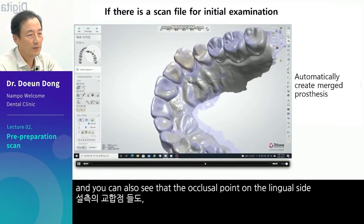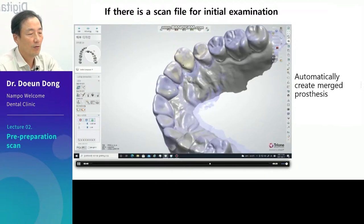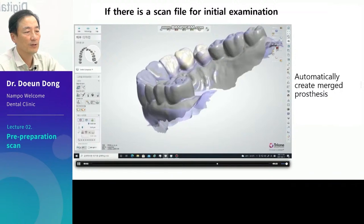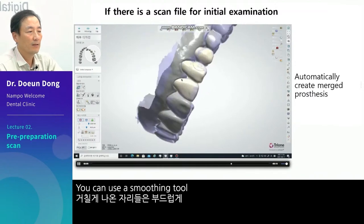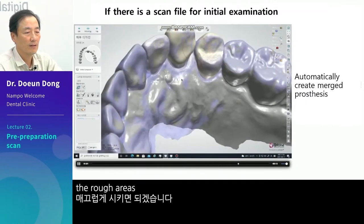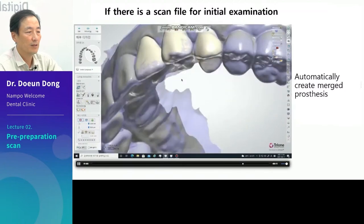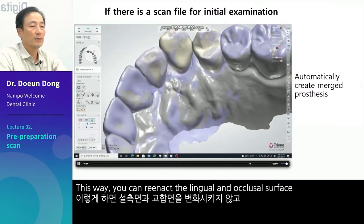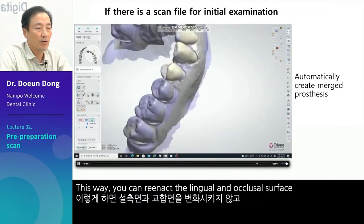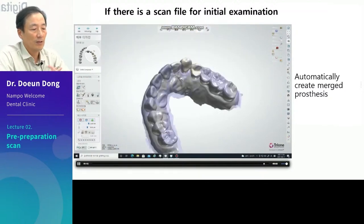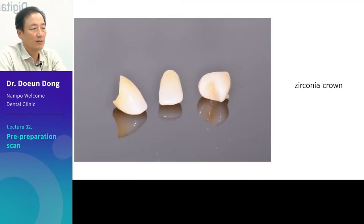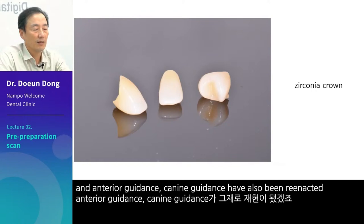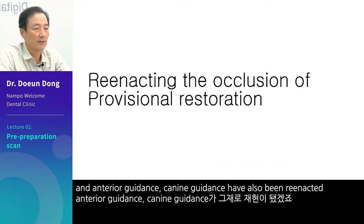And you can also see that the occlusal point on the lingual side has occluded well. You can use a smoothing tool to smooth out the rough areas. This way, you can reenact the lingual and occlusal surface without changing them. Then you can put it in the milling machine. This is how the zirconia crown is made. The lingual surface has been reenacted, and anterior guidance and canine guidance have also been reenacted.